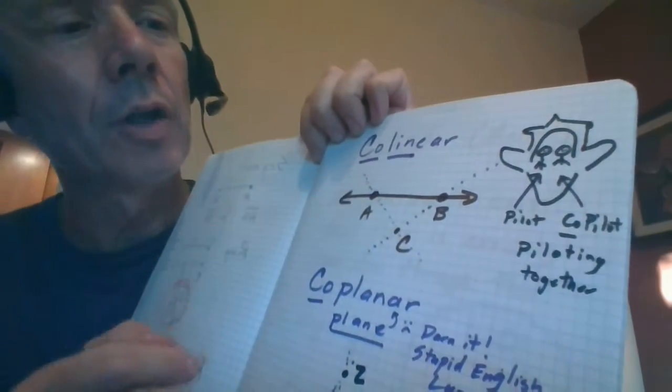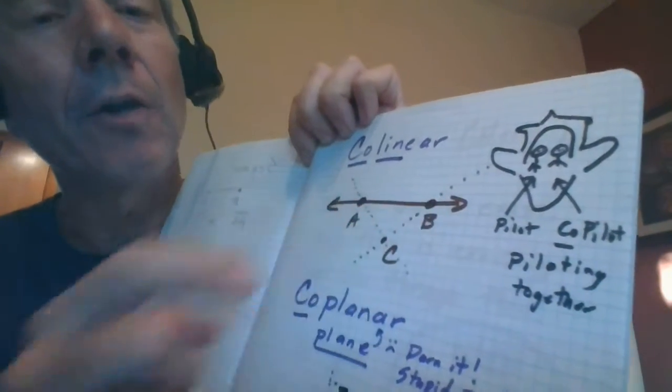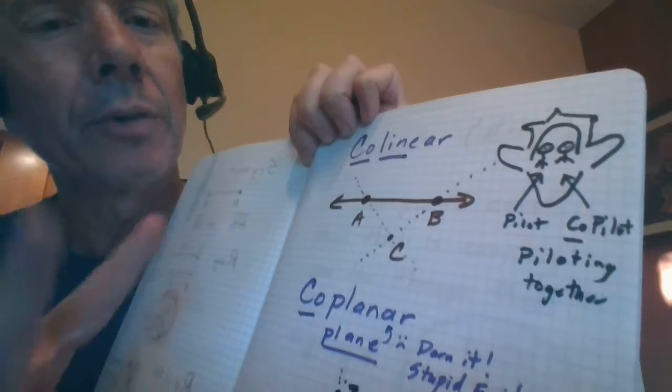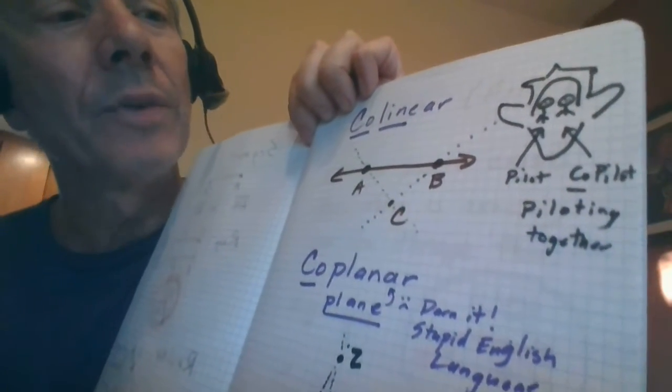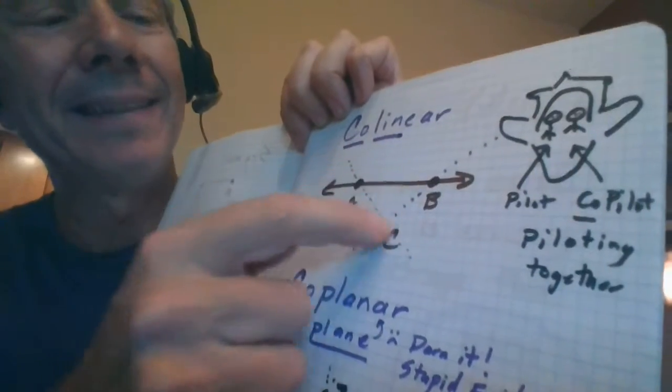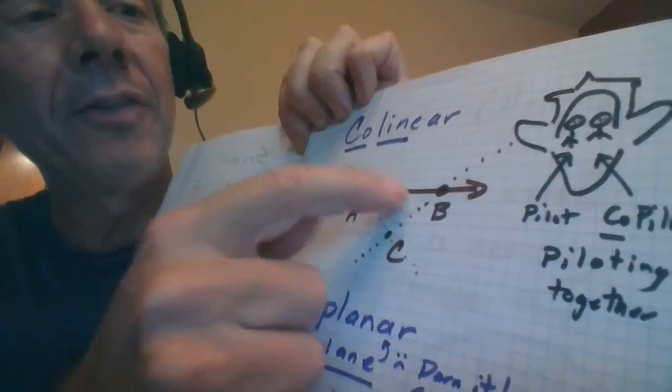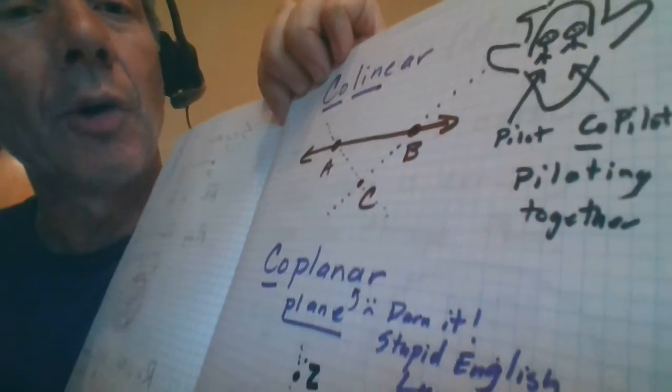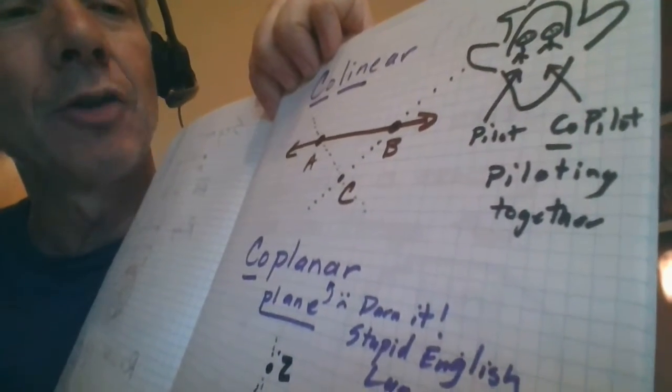Collinear and coplanar means in the same line and in the same plane. Notice A and B are collinear. Now, this is a little tricky. B and C are also collinear. That's my little dots there. A and C are also collinear. Two dots are always collinear because you can always create a line between them. But what's not collinear is A, B, and C together. As a group, they're not collinear. If C was on the line, then A, C, and B could all be collinear. But C is clearly not on the line. So, collinear are any points which are on the same line. They've got to line up.